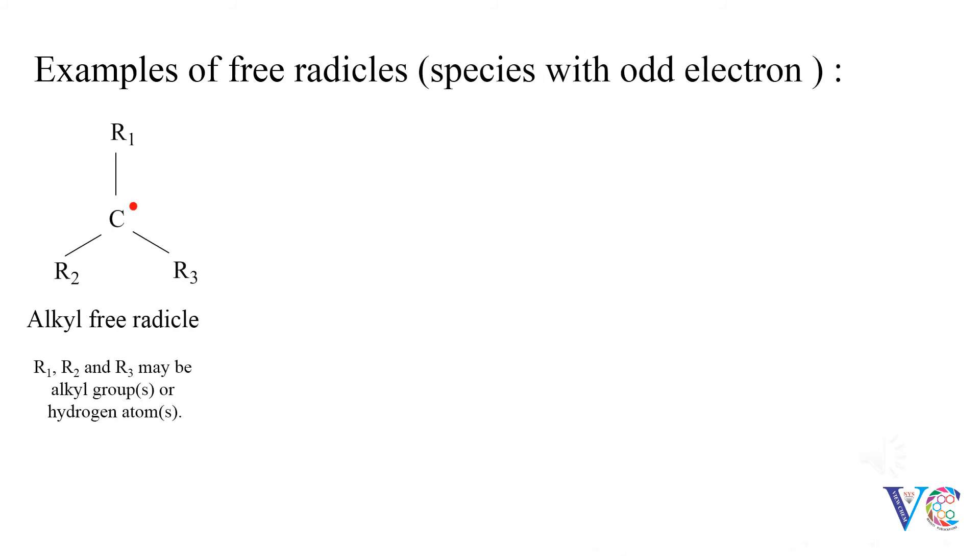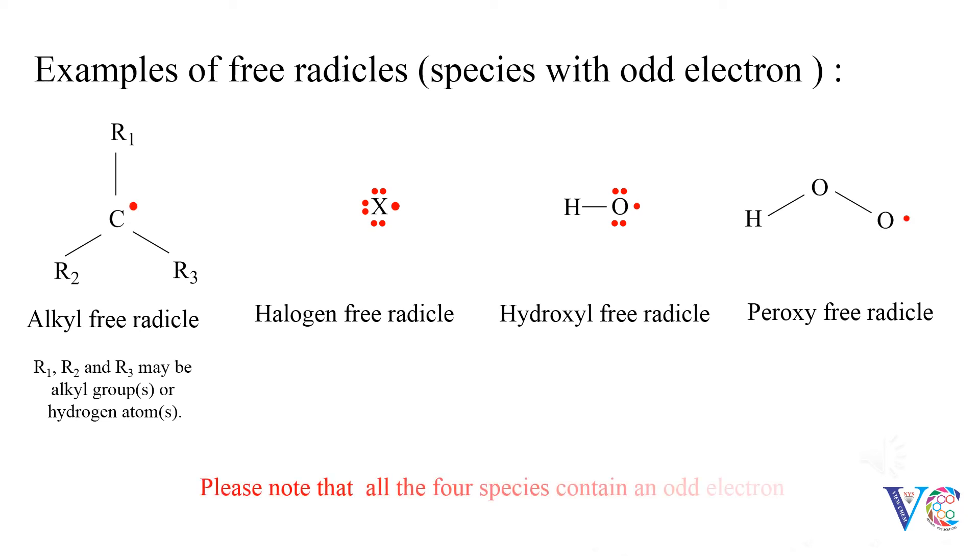Examples of free radicals, that is species with odd electron: alkyl free radical, halogen free radical, hydroxyl free radical, peroxy free radical. Please note that all the four species contain an odd electron.